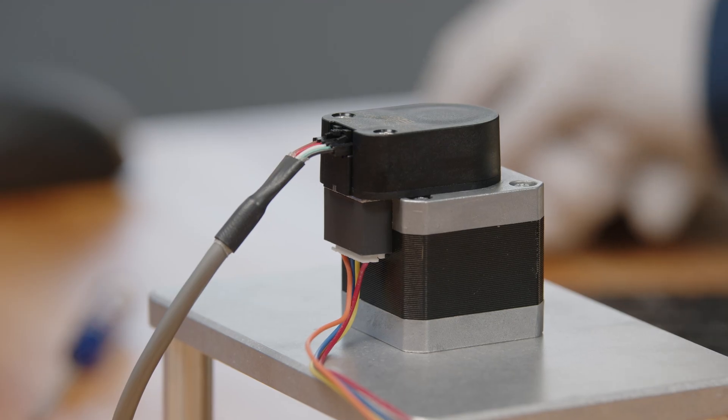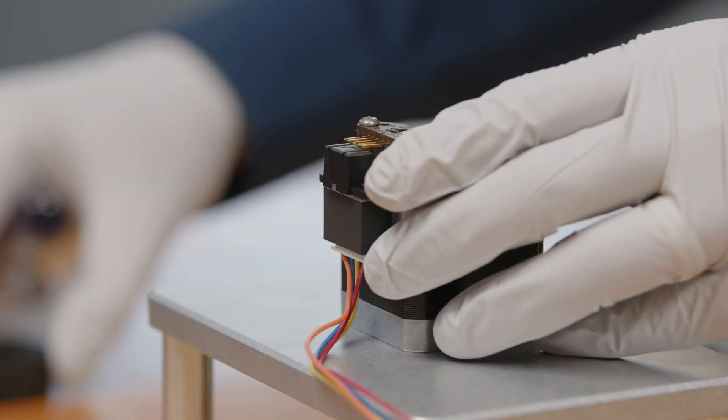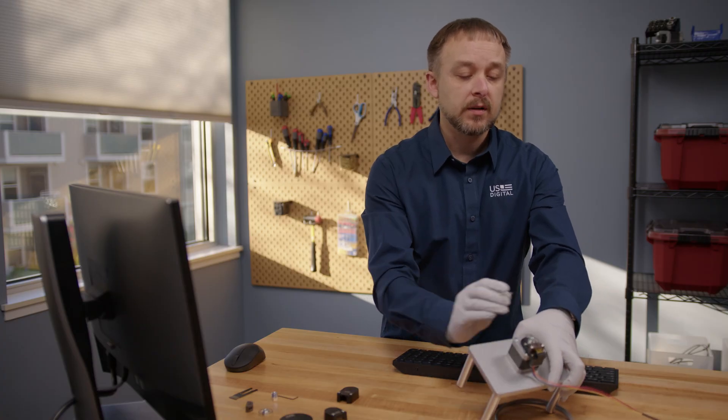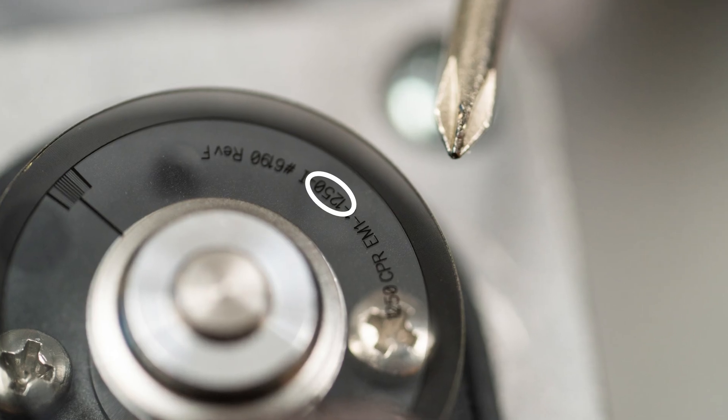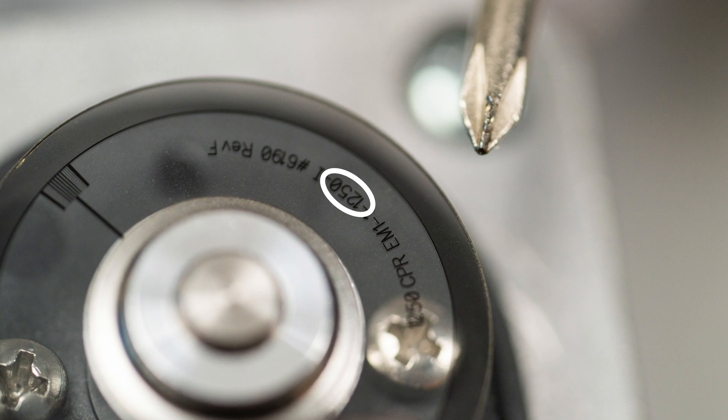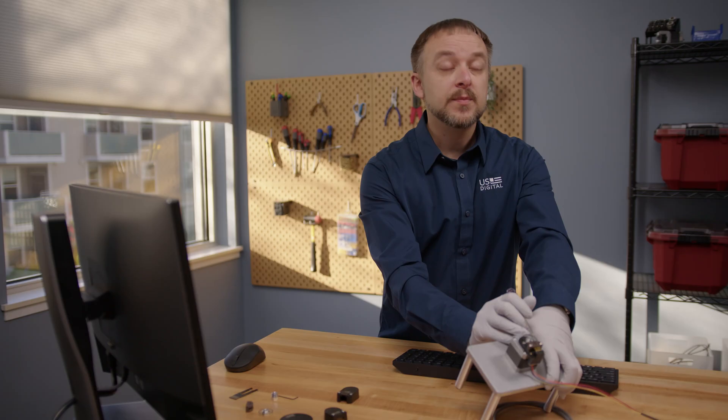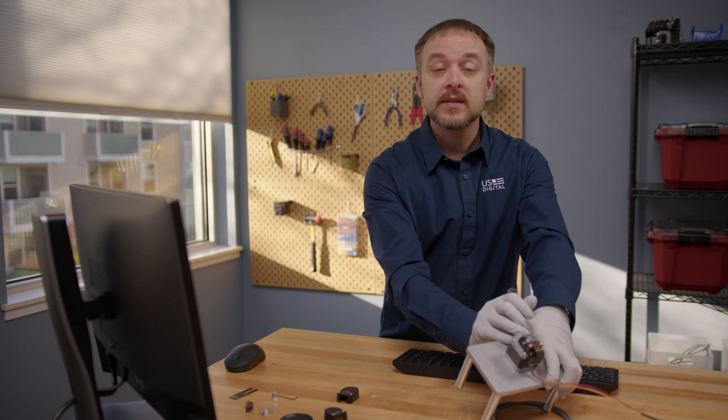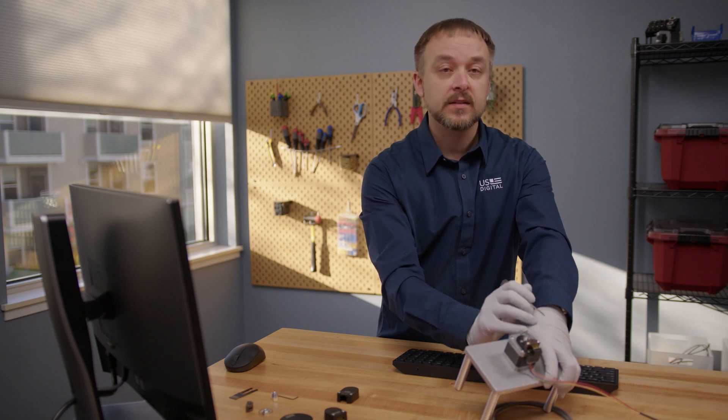Let's start by looking at the encoder disk. The encoder CPR is printed right on the face of the disk. As you can see here, this is a 1250 CPR disk. The text is small, so a magnifying glass or maybe slip a piece of white paper underneath it so it's easier to read. But in this case, we do have the correct CPR on the disk.